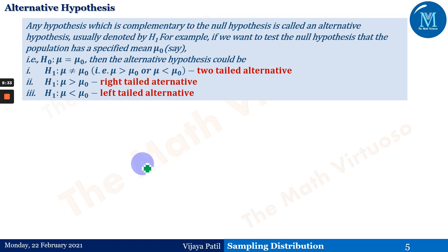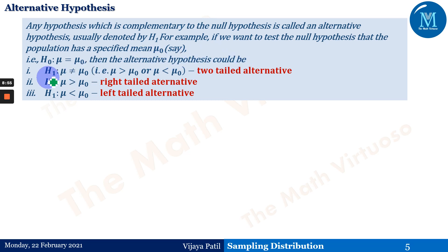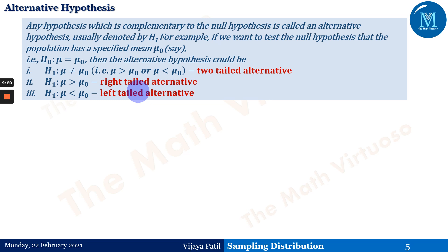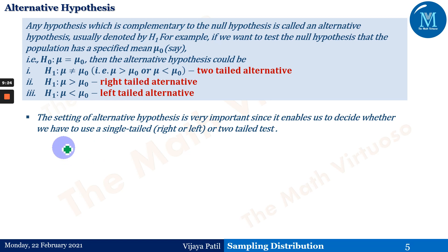Any hypothesis complementary to the null hypothesis is called an alternative hypothesis, usually denoted by H₁. For example, if we test H₀: μ = μ₀, then the alternative hypothesis could be H₁: μ ≠ μ₀ (two-tailed alternative), H₁: μ > μ₀ (right-tailed alternative), or H₁: μ < μ₀ (left-tailed alternative). The setting of the alternative hypothesis is very important since it determines whether we use a single-tailed or two-tailed test.